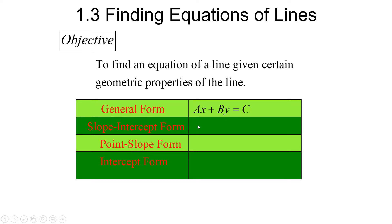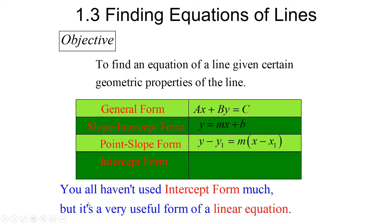Your old slope-intercept form that you use most often in Algebra 1: Y equals MX plus B. Then point-slope form, which we use most often in Calculus: Y minus Y sub 1 equals the slope M times the quantity X minus X sub 1. And then finally, intercept form — you haven't used that much, but it's a very useful form. It looks like this: X over A plus Y over B equals 1, where A is your X-intercept and B is your Y-intercept.